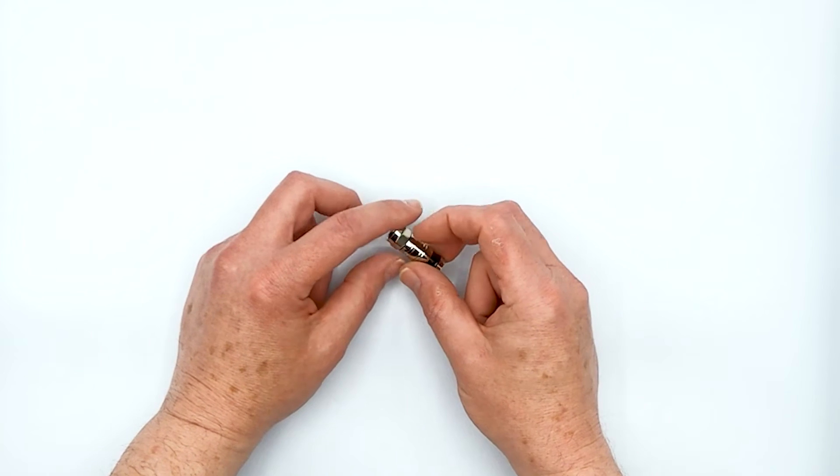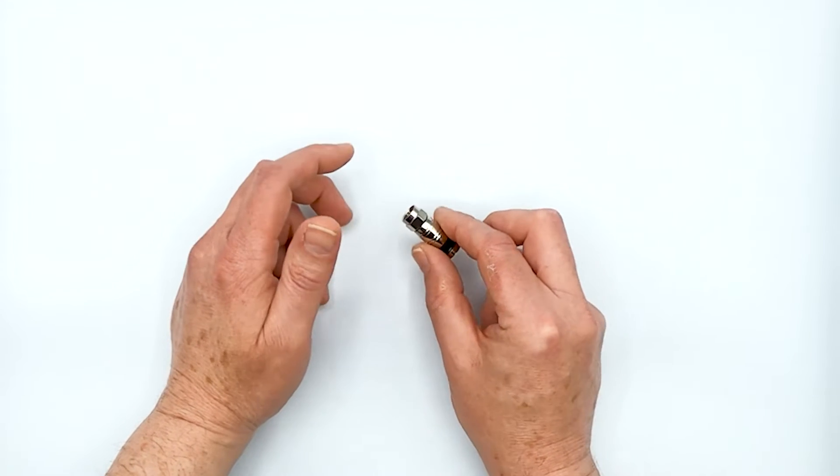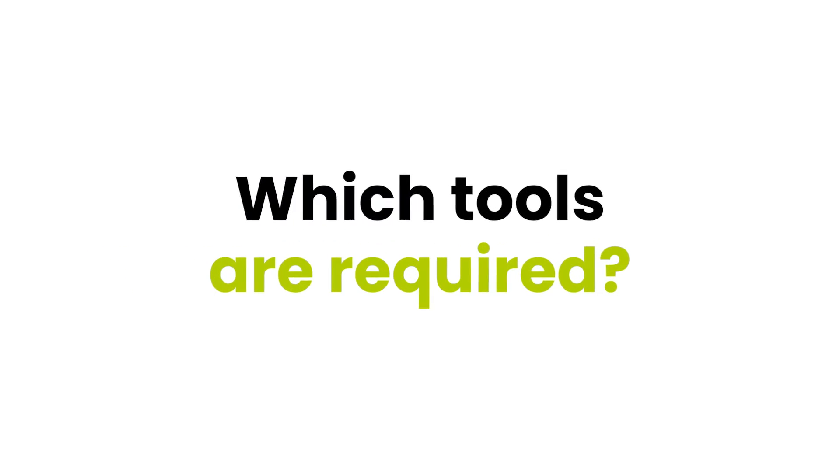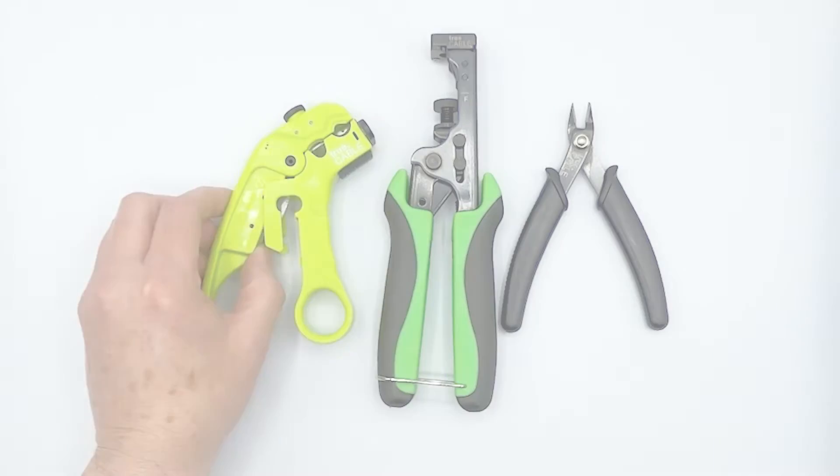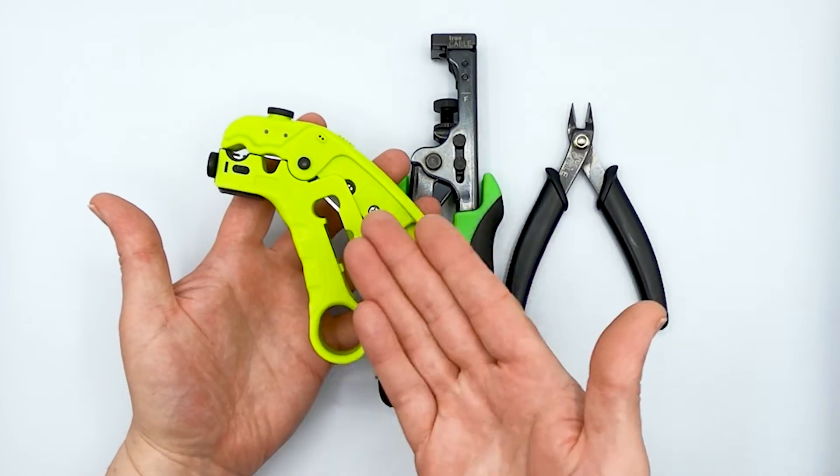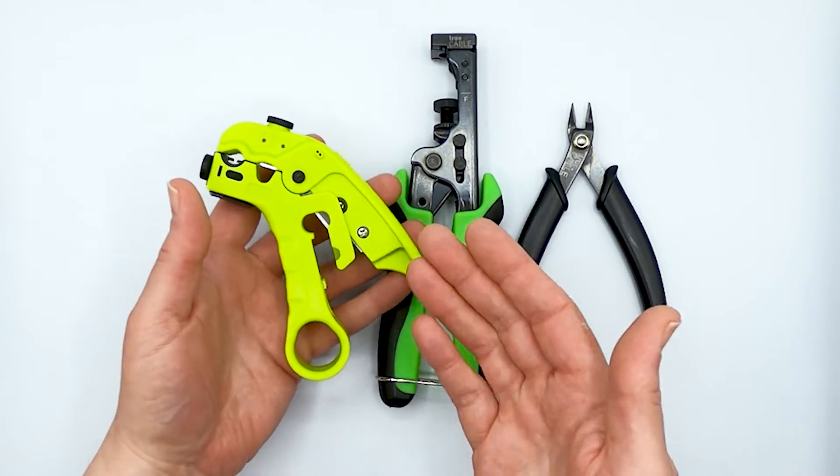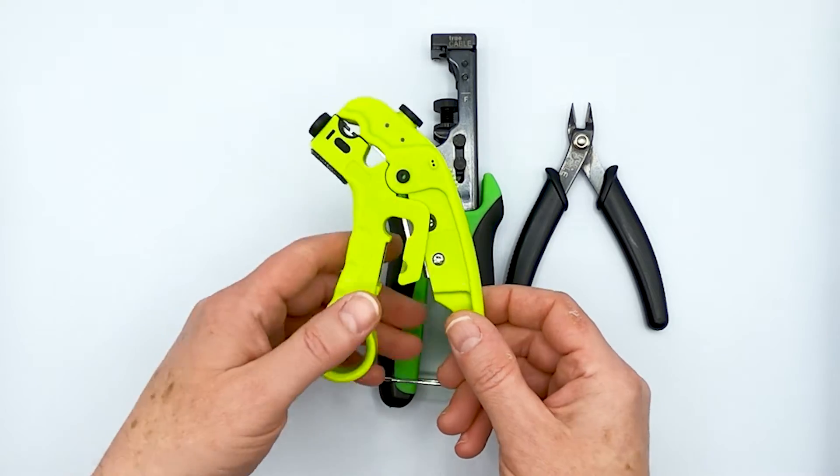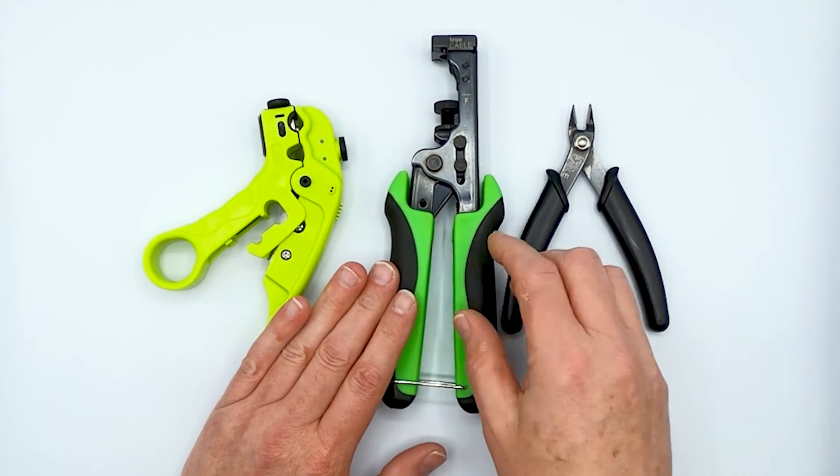So without any further ado, let's go ahead and actually show you how this easily goes onto a quad shield coaxial cable. Be right back. Our cut and strip tool that we've had for quite some time is actually something that is a great tool to use, especially because our coaxial cable is solid copper conductor. We also have a new tool that we're introducing with our coaxial cable and F connectors.